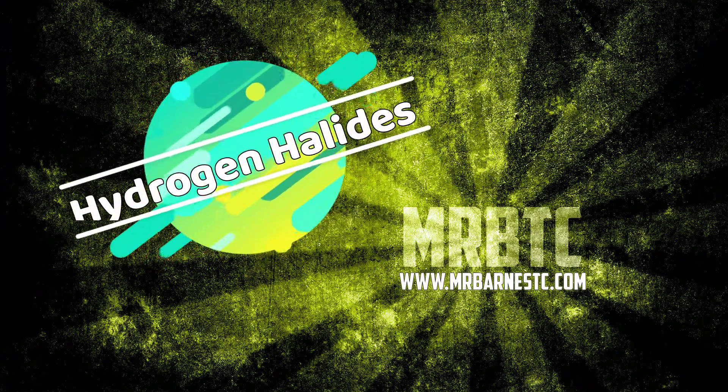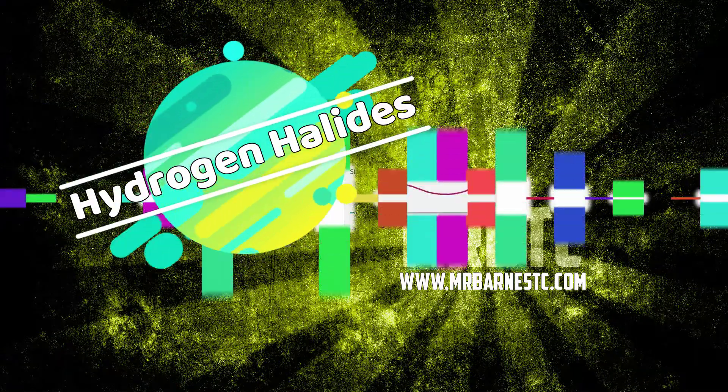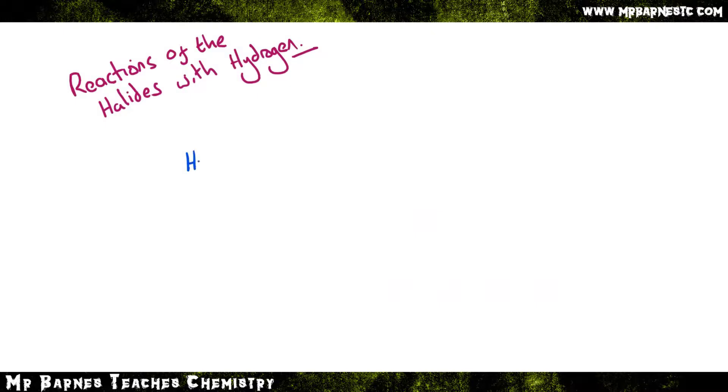Hi guys, welcome to this video looking at what happens when hydrogen reacts with the halogens. If we start off with the general word equation, if you take hydrogen and react with any halide, any halogen, it will form a hydrogen halide.